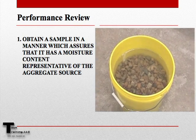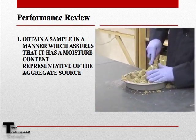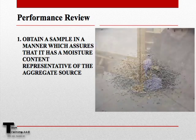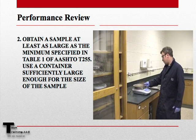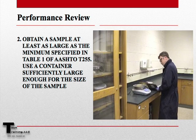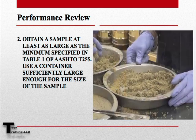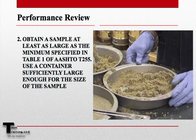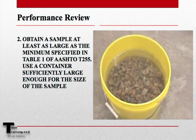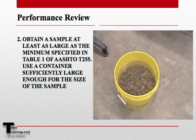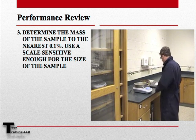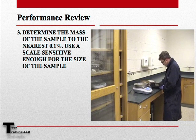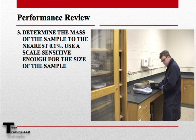When testing for moisture, we want to ensure that the sample we obtain is representative of the aggregate supply. A sample must be obtained at least as large as that required in AASHTO T255, Table 1. Be sure that a container is provided large enough to hold this sample. Determine the mass of the sample to the nearest 0.1%, using a scale which is sensitive enough for the size of the sample.